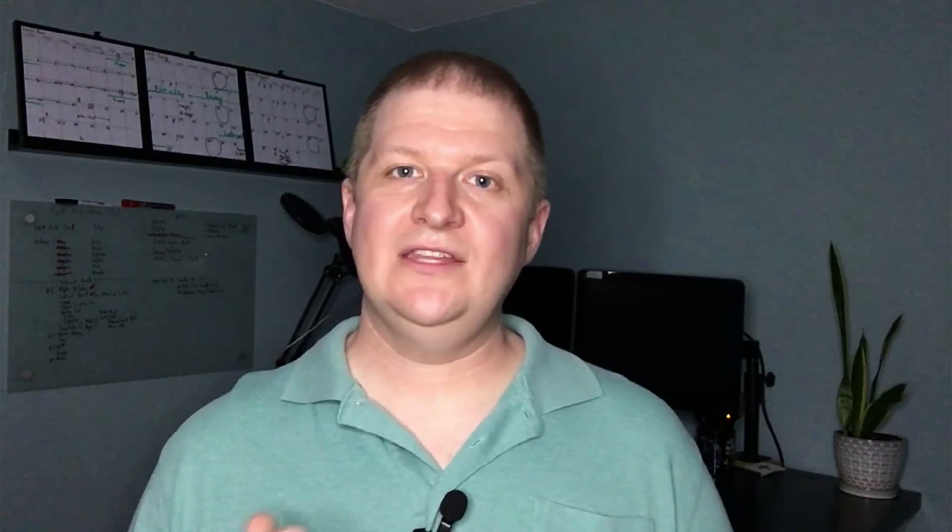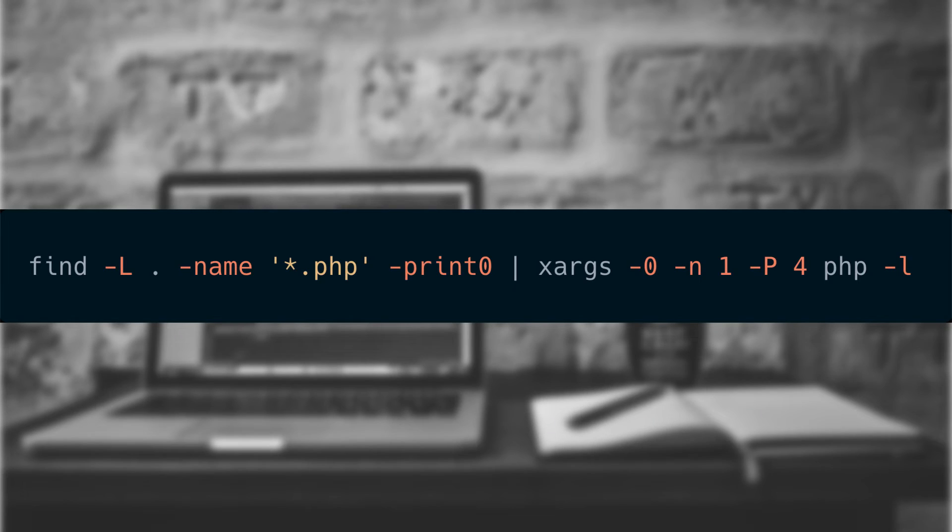The mildly annoying part about the linting option is that it will only run on one file at a time. This can be a problem when we set up our testing or continuous integration server. The first solution is that we can use the find and xargs command line tools to run it on all of the PHP files inside our project. This works and is easy to implement, but the downside is that it runs each file in sequence — so if two files are failing the linting check, we'll get the first one but not the second. We have to run it multiple times to find all of the problems.